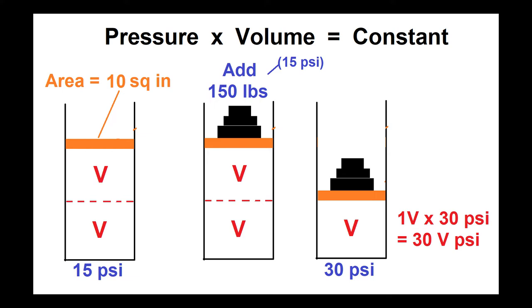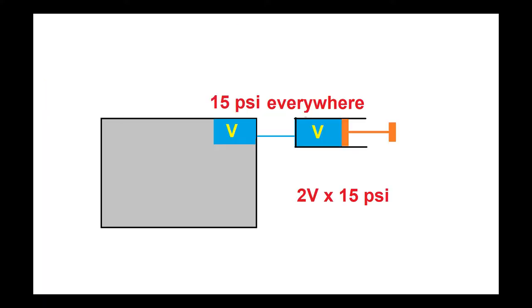Now suppose instead of a piston we have an engine block with a volume of air trapped in the top, and we attach to it an air pump that just magically happens to have the exact same volume V.